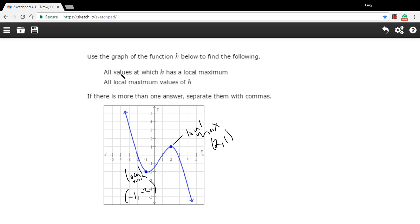problem says find the following: all values at which H has a local maximum. The value they're talking about is the x that you put in, so the local maximum value here is 2. And then, all local maximum values of H—the value of H at that local max is the y, so that value is 1.